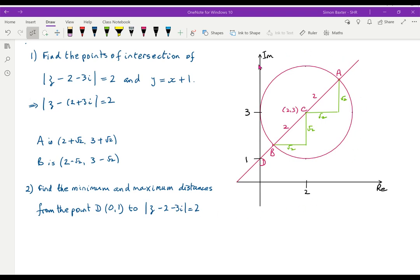Well, looking at the diagram, the answer should be pretty obvious. The smallest distance from D to the circle must be the distance DB, and the maximum distance must be the distance DA. So if we know the distance DC, we can easily work out DA, and also subtract 2 to work out the distance DB. So all we have to do here is find the distance CD.